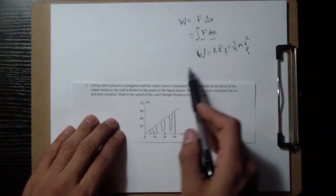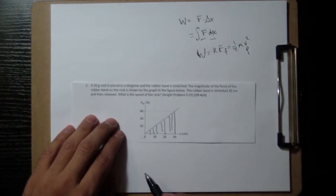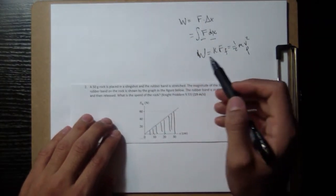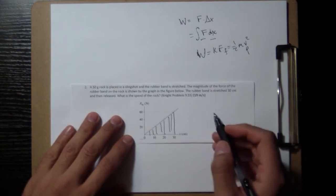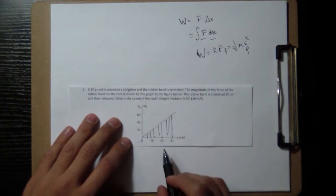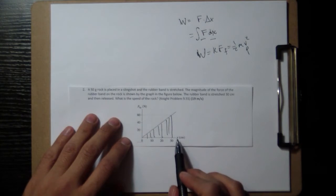And we know the mass, so we just need to figure out what W is. So the work is going to be 30 times 60. These are centimeters and newtons, so let's convert.